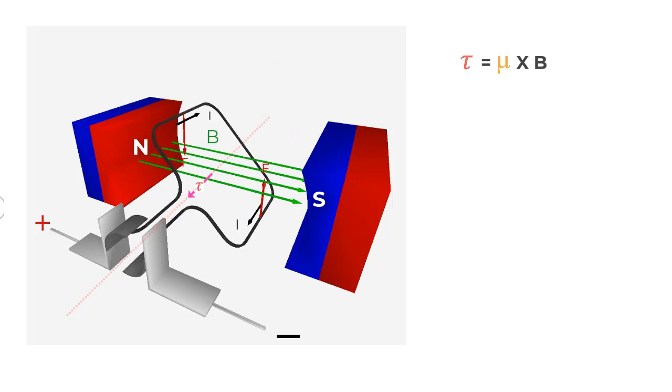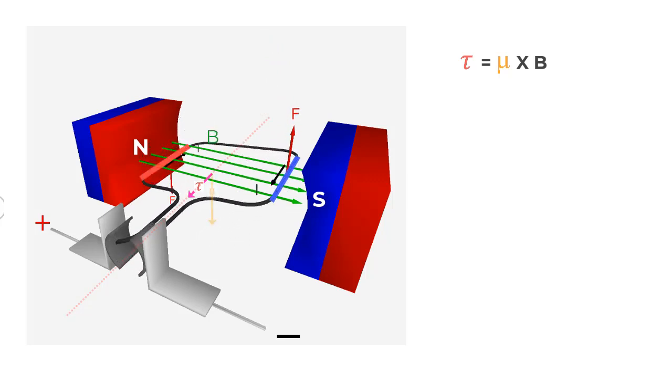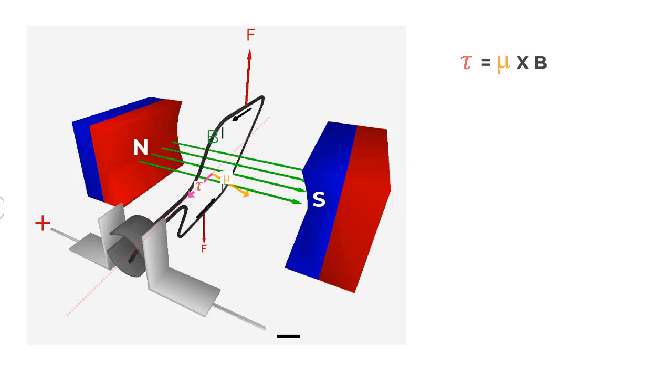Now the rotor has moved an angle of 90 degrees and vector mu and field vector B have got aligned, bringing it into an equilibrium position. Since the angle between mu and field vector B now is 0, making mu cross B or the torque 0. It should theoretically stay in this equilibrium position or at the most oscillate about this orientation.